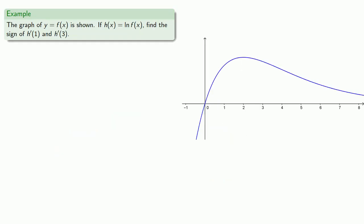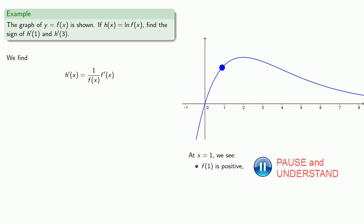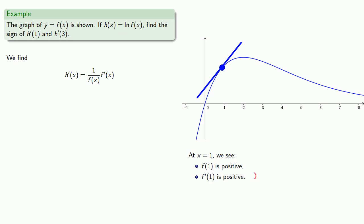We can also consider compositions of functions. Suppose the graph of y equals f of x is shown. If h of x is the log of f of x, we can find the sign of h prime of 1 and h prime of 3. Using the chain rule, h prime of x involves f of x and f prime of x. At x equals 1, f of 1 is positive, and the tangent line tells us f prime of 1 is positive. So h prime of 1 is 1 over a positive number times a positive number — h prime of 1 is positive.